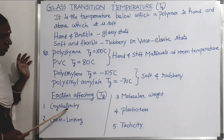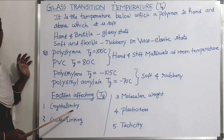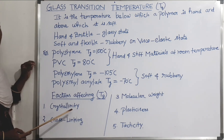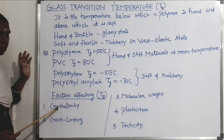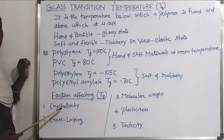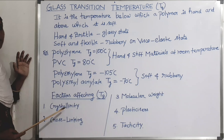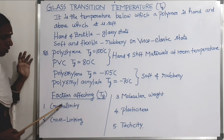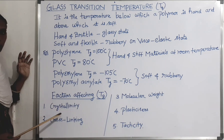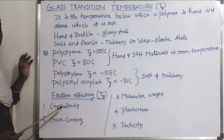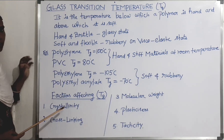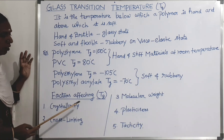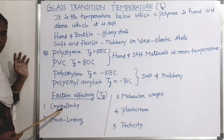The first factor is crystallinity. Crystalline polymers are regularly or orderly arranged — the polymer chains are orderly arranged. So the intermolecular forces of attraction between the polymer chains increase, and therefore the Tg value also increases.